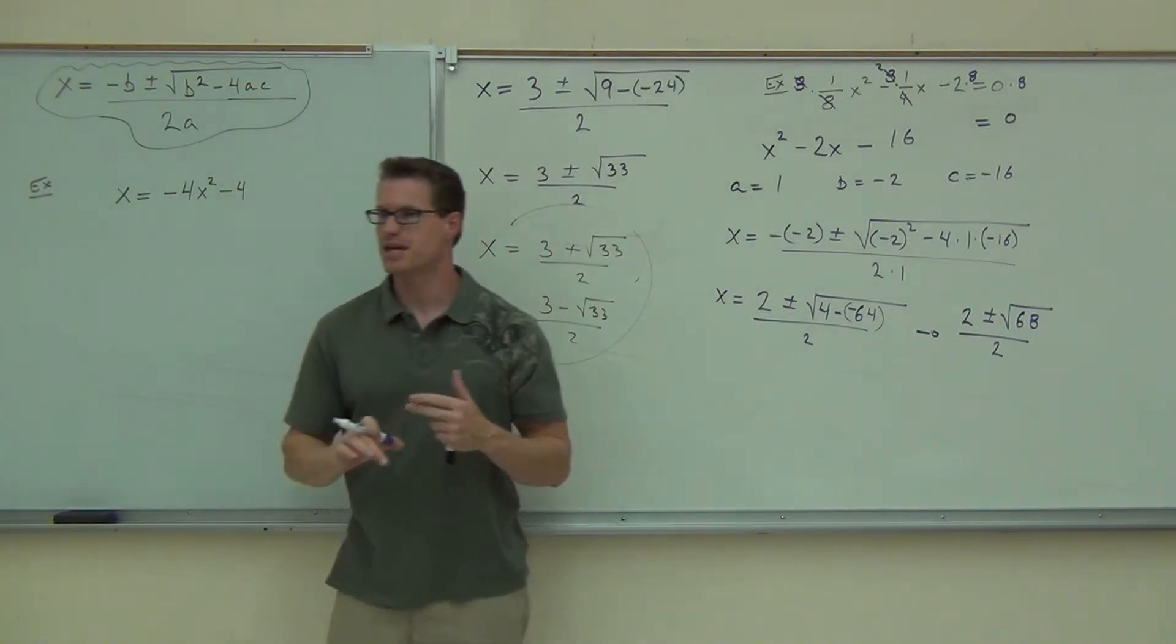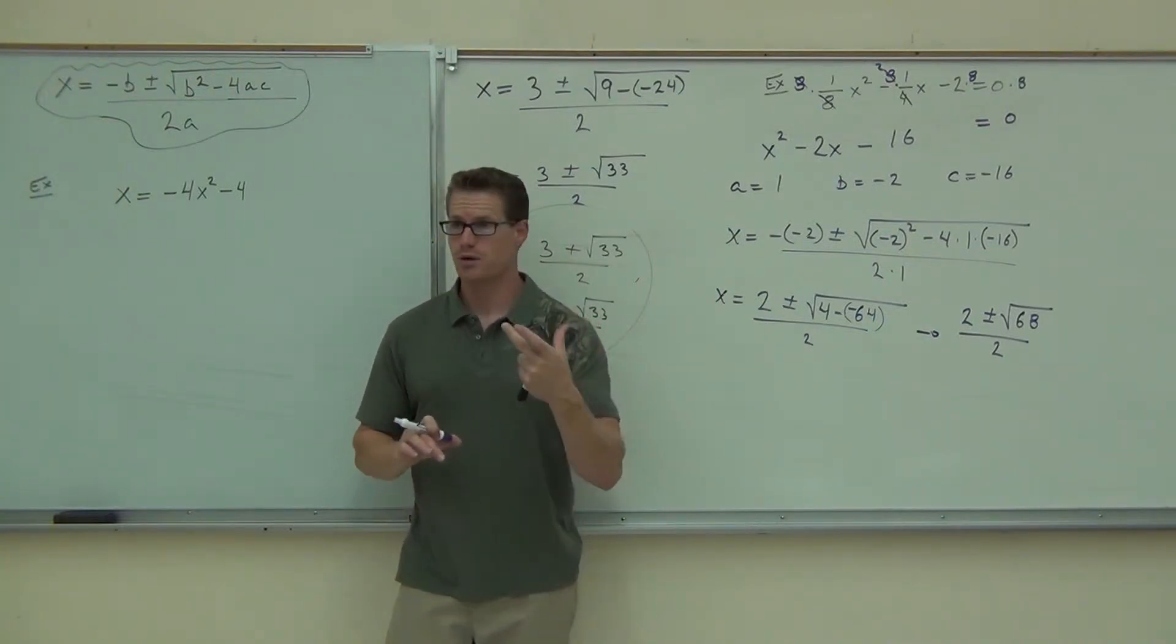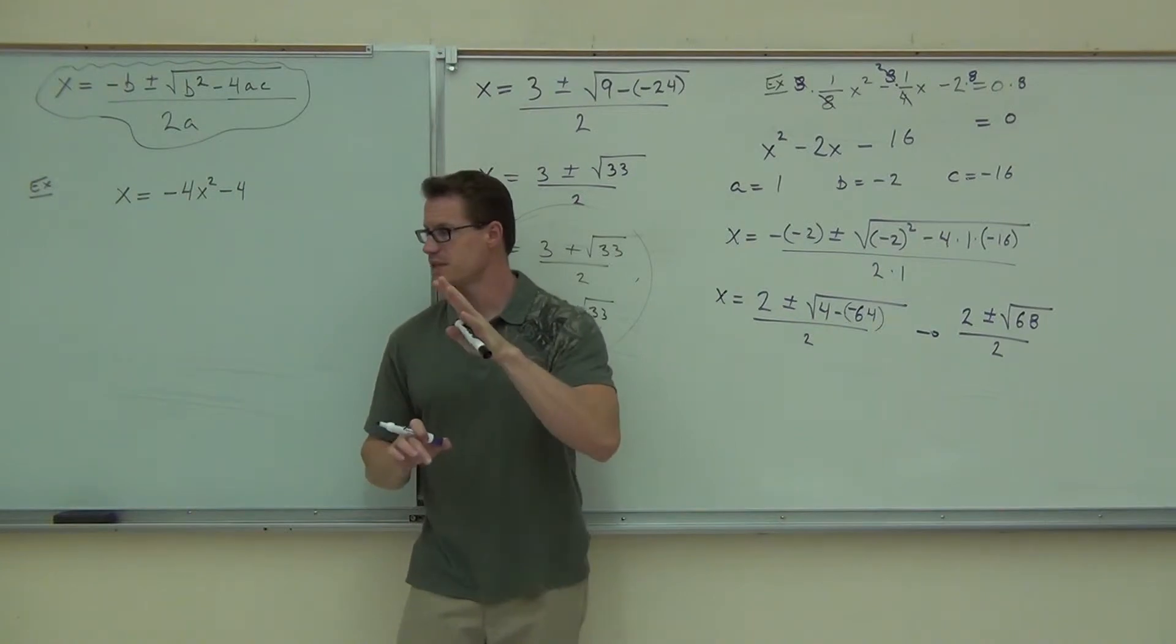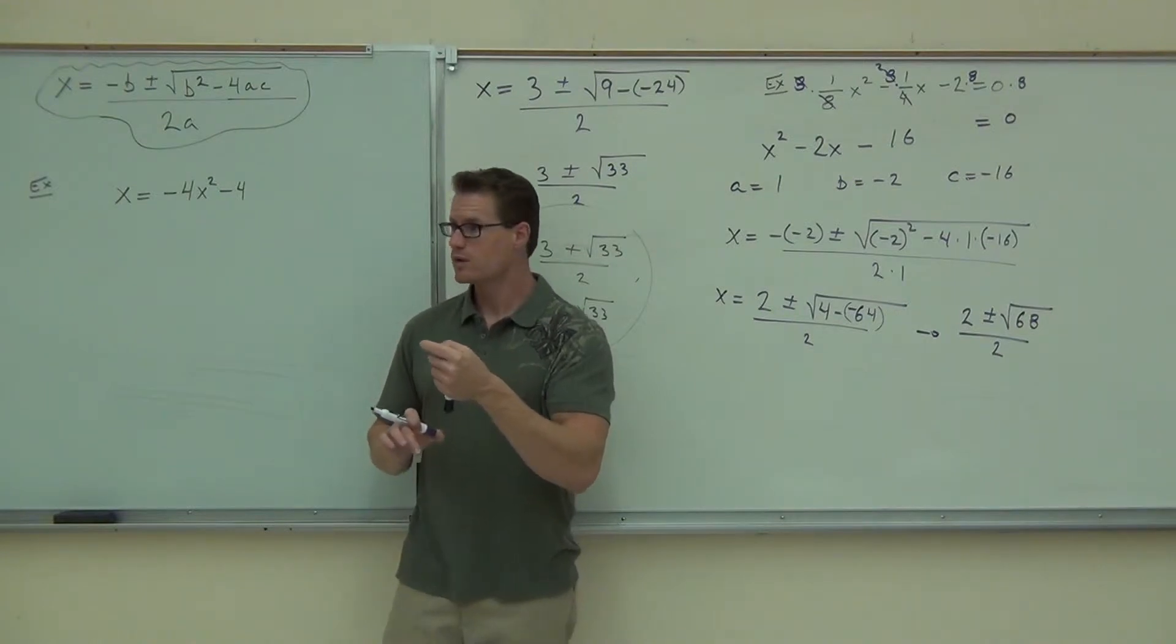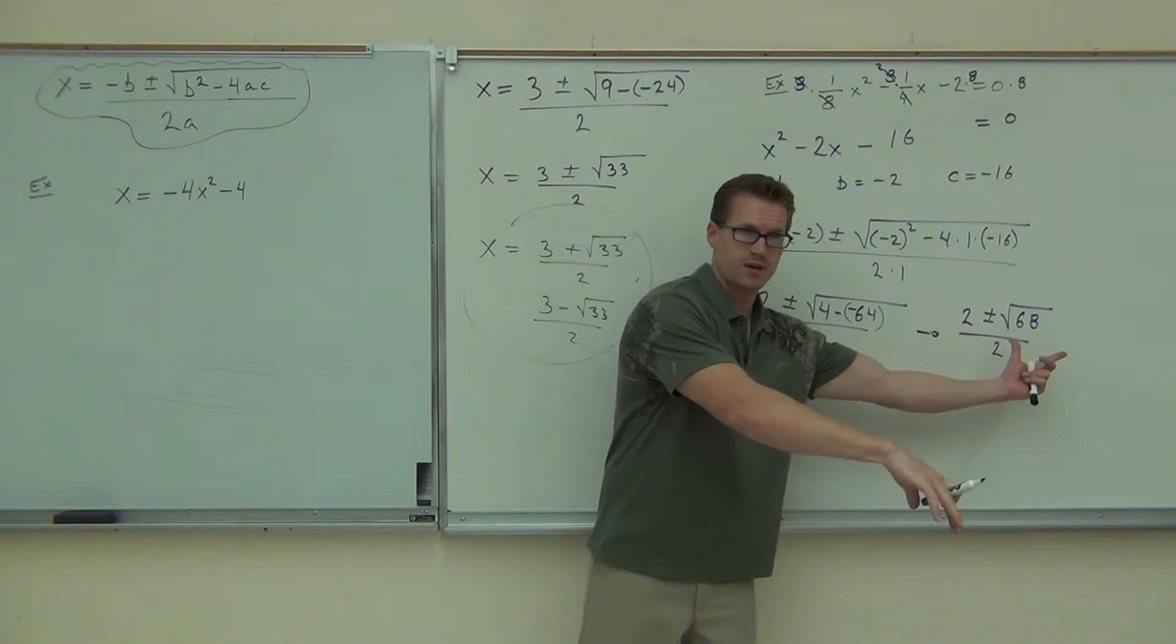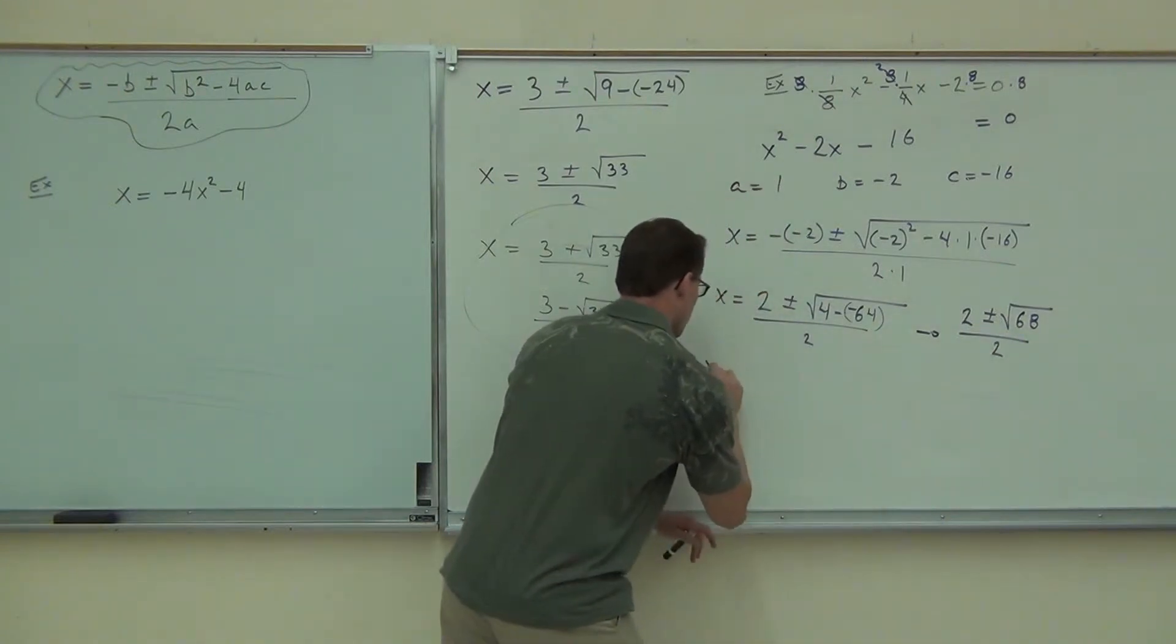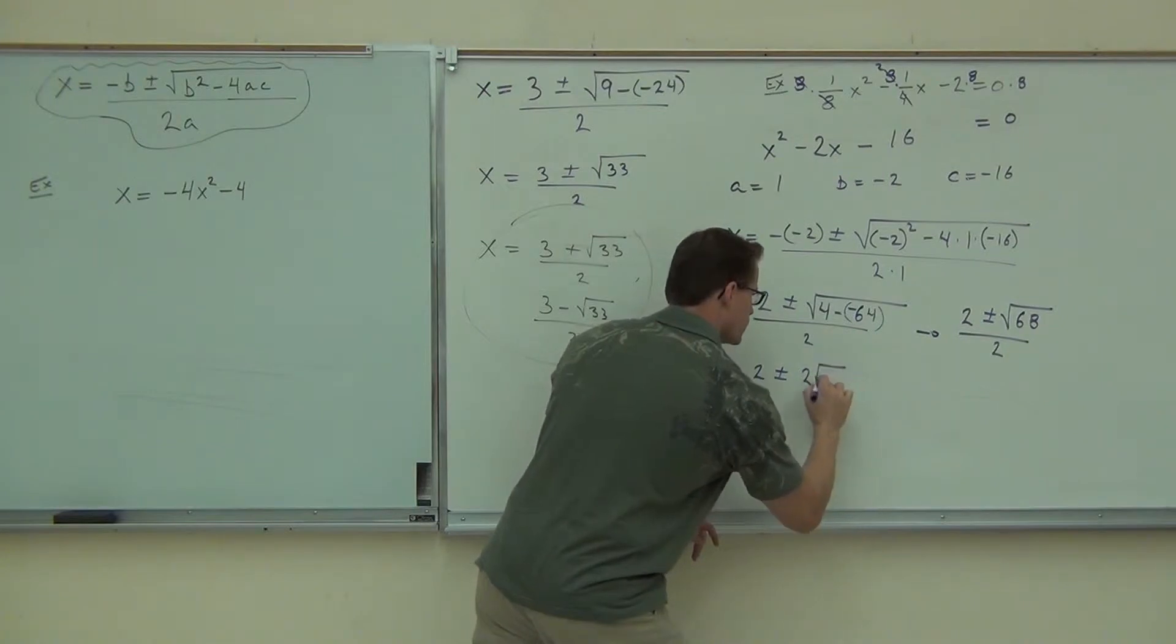Can I simplify the square root of 68? Yep. Four and 17. So you try to divide by a perfect square. The only one that works here is four. So you're going to do the four times the 17 and you're going to get two root 17. Did you get two root 17? If not, work on your simplification. If you made it this far, you should be able to make it down to the simplification. So this is two plus or minus two root 17 over two.